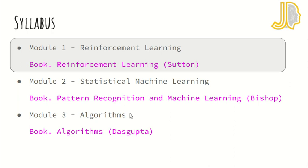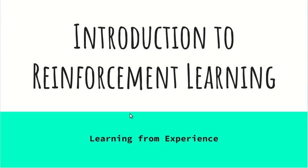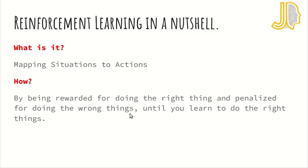This video focuses on reinforcement learning, so let's start with an introduction. What is reinforcement learning? We term it as learning from experience — mapping situations to actions by being rewarded for doing the right thing and penalized for doing the wrong thing until you learn to do the right thing. You're placed in some environment thinking about how to make optimal decisions, essentially solving optimization problems to find an optimal policy for acting in different states.